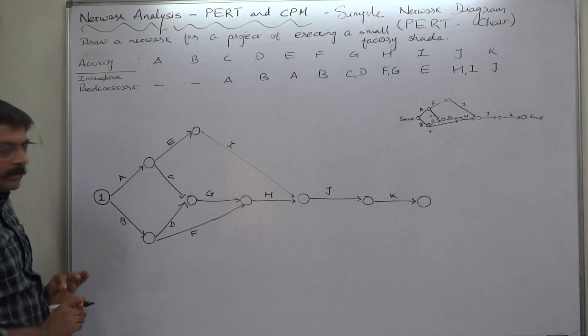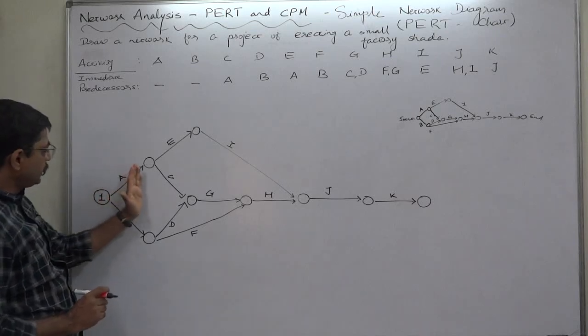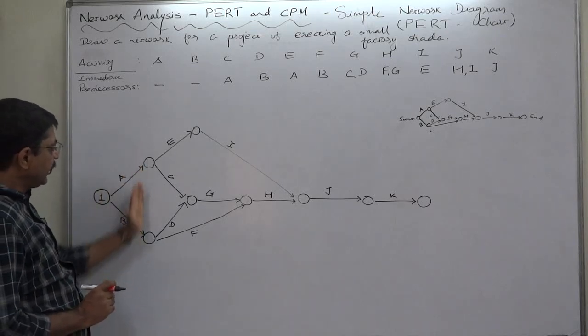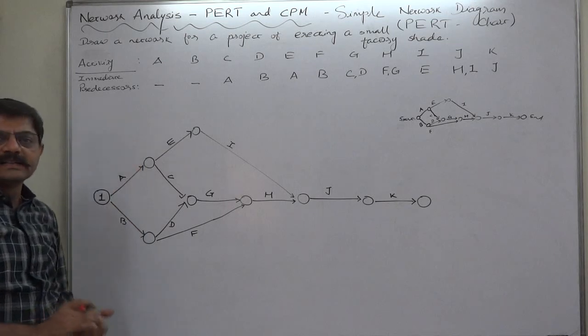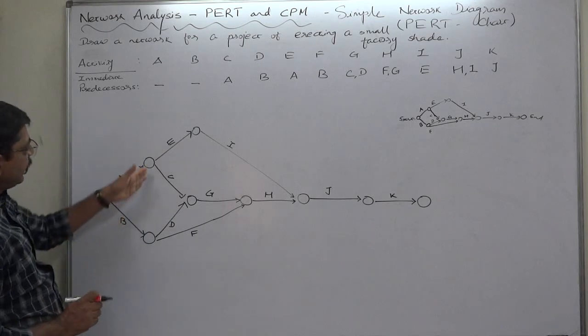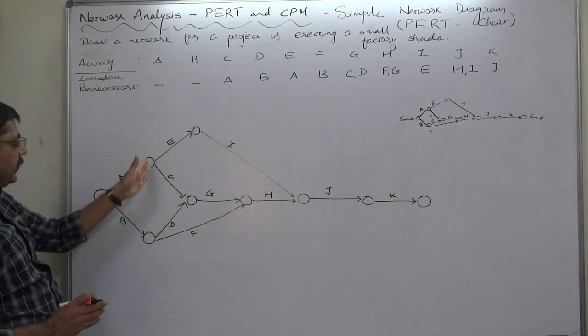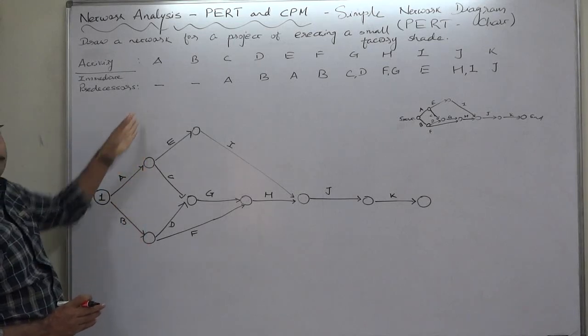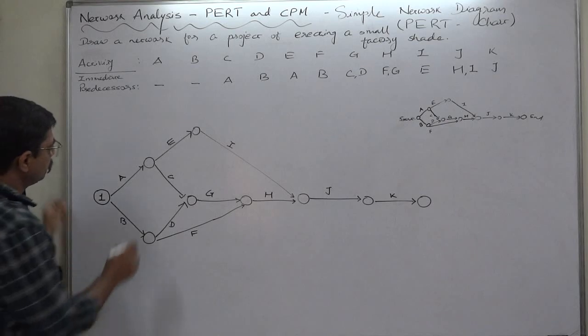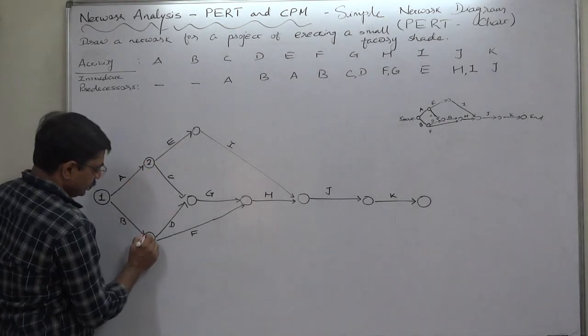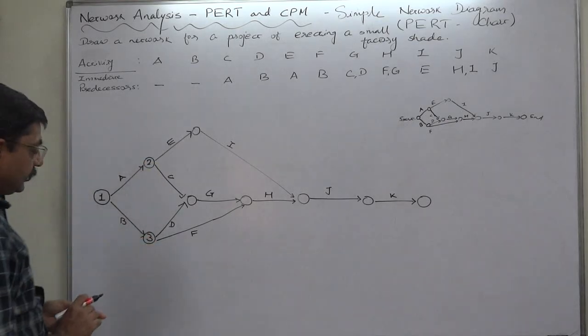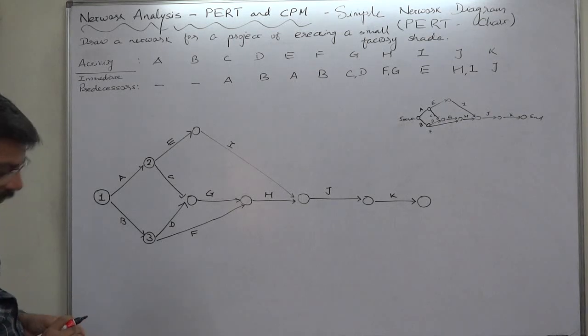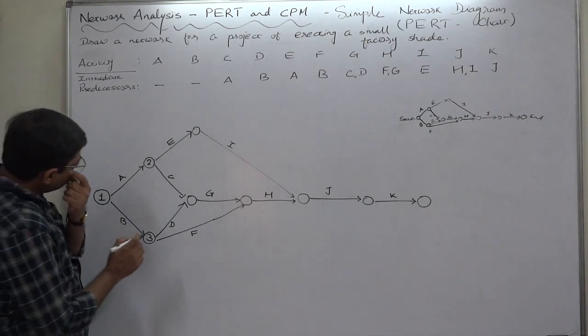First take the initial event, number it one. Now we shall remember that we have already used number one. Now forget all other activities on left side and go to the next level. If there are two or more events vertically, number them from top to bottom. So this must be two, this must be three.